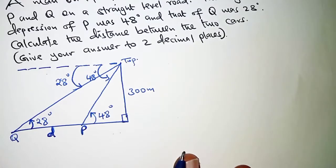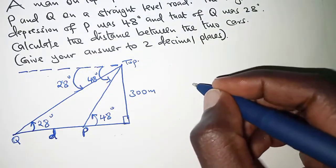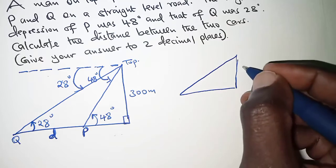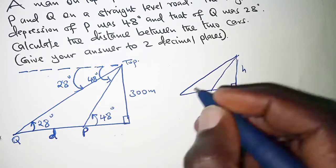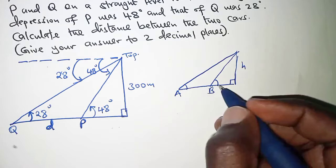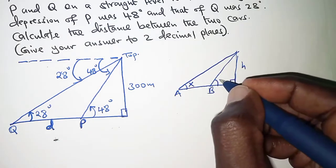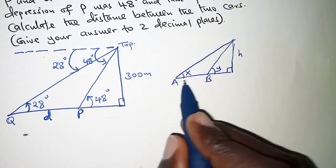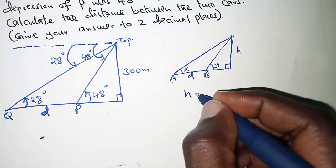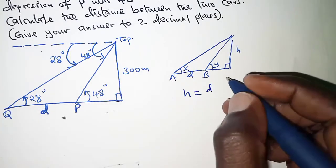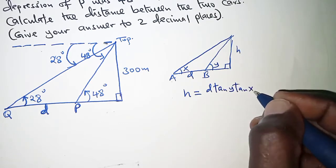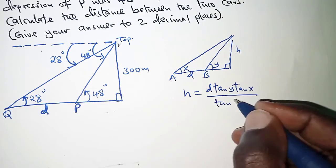So, I am going to use a formula where if you have the height as H and then we have the two points. Let's say A and B. So that the angles of elevation at A and B are as follows. So, if at A we have X and B we have Y and then we consider AB to be distance D, then the height there is obtained by simply having this distance D times tangent of angle Y times tangent of angle X all over tangent of angle Y.